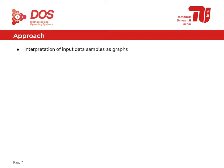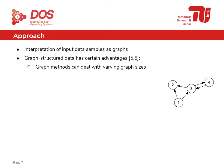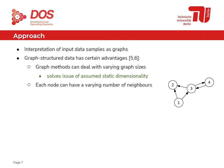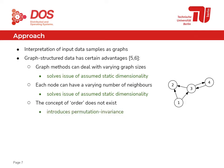Our approach proposes an interpretation of input data samples as graphs. Graph-structured data has certain advantages: most methods operating on graphs can deal with varying graph sizes, solving the issue of assumed static dimensionality. Each node can have a varying number of neighbors and is not bound to a fixed set. Also, the concept of order does not really exist in graphs, which introduces permutation invariance. The general idea is to model the multivariate time series as an attributed graph for more flexibility.